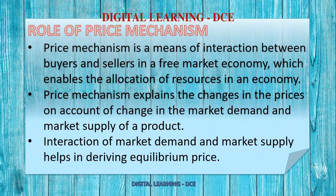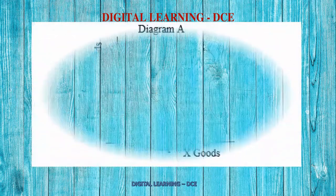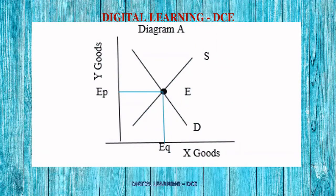Price mechanism is the interaction between market demand and market supply, which helps us derive equilibrium price — the optimum price — which in turn helps in the optimum allocation of resources. Diagrammatically, it is the interaction between demand and supply. The Y-axis represents price and the X-axis represents quantity. Demand is a downward sloping line and supply is an upward sloping line. They interact at a point called E, where we derive the equilibrium price (EP) and equilibrium quantity (EQ). Equilibrium quantity is the quantity the seller is ready to sell and the buyer is ready to buy at a given price.